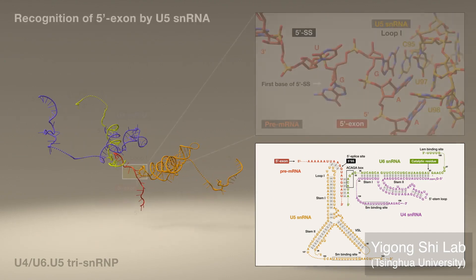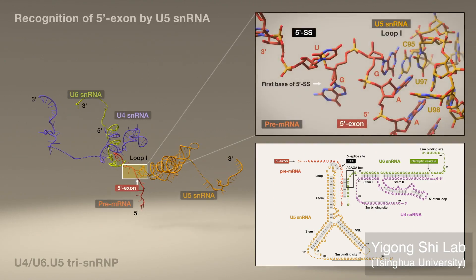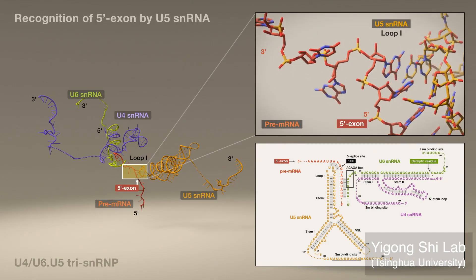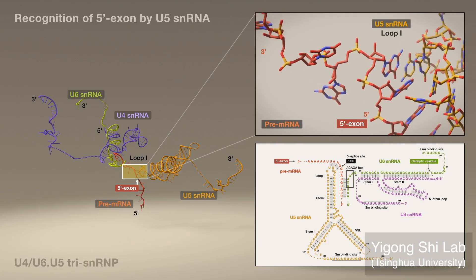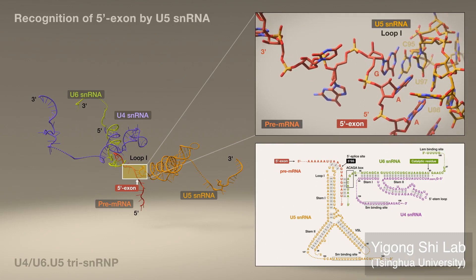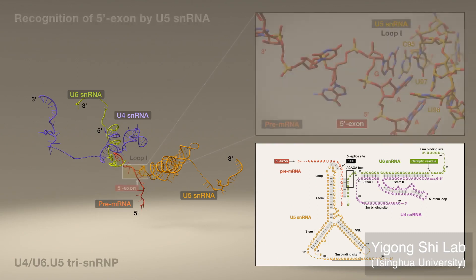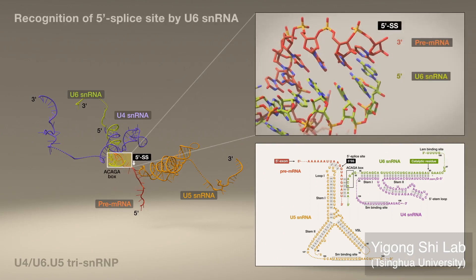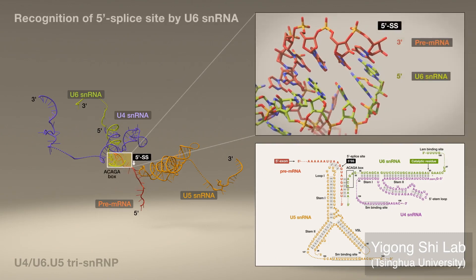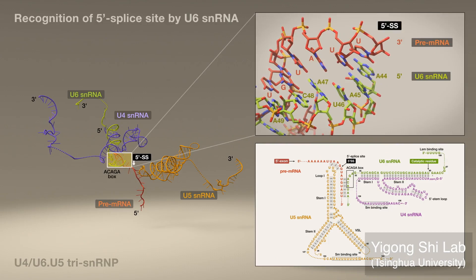Meanwhile, recognition of the 5' exon in this structure occurs via loop 1 of U5 RNA, and the 5' splice site via a motif in the U6 RNA.